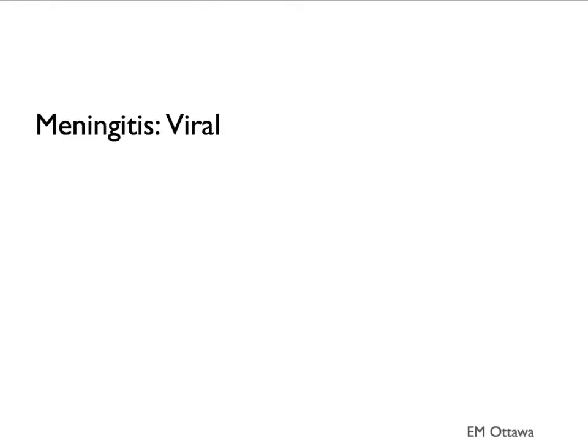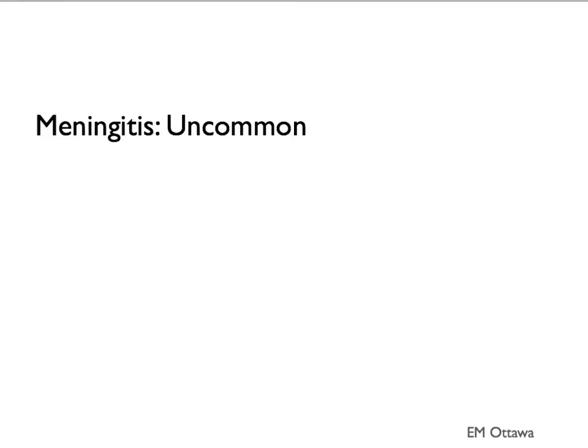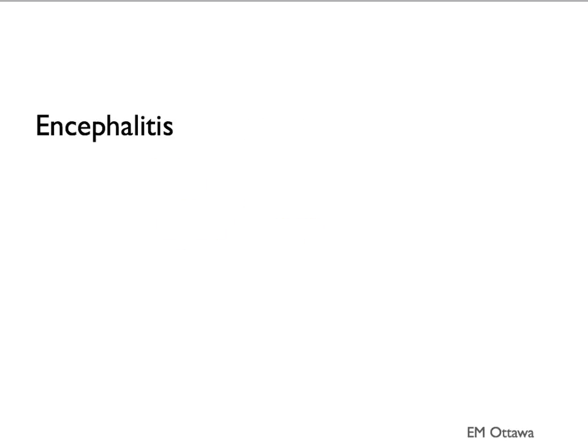Viral meningitis is usually caused by enterovirus and HSV, or the herpes simplex virus. Common causes for other meningitis include TB, Lyme disease, and others. Encephalitis is usually caused by virus, including the herpes simplex virus, varicella zoster virus, measles, and others.